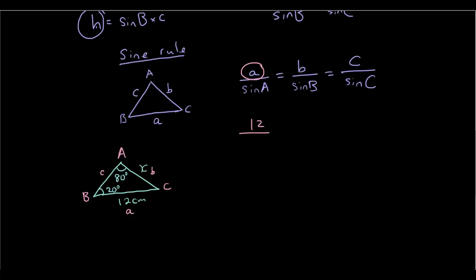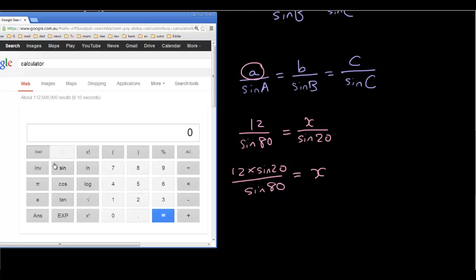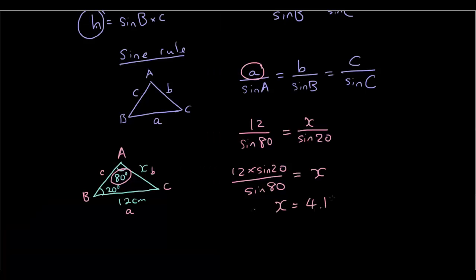So we have 12 over, and big A is 80, so sine 80 equals little b is x and big B is 20. So we can simply rearrange this equation now to find x by moving the sine 20 to the other side, so times sine 20 over sine 80. So putting that in the calculator, make sure your calculator says degrees. 12 times sine 20 divided by sine 80 equals 4.16. So x is equal to 4.16 centimeters.